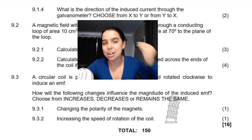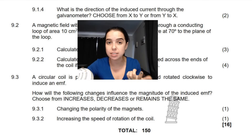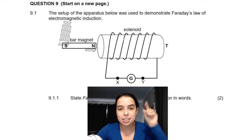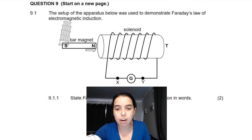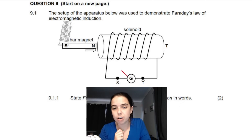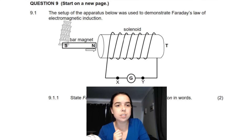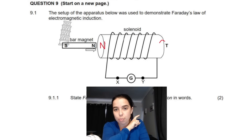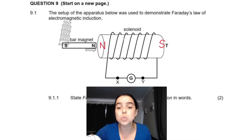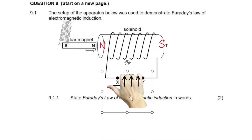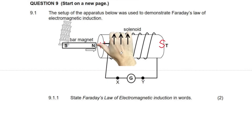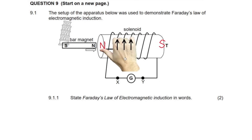Question 9.1.4 asks for the direction of the induced current through the galvanometer — choose from X to Y or from Y to X. We established that a north pole is created at one end of the solenoid and a south pole on the other side. To figure out which way the current is going, you use the right hand rule. You point your thumb towards the north, and the direction your fingers are curling in is the direction of the current.